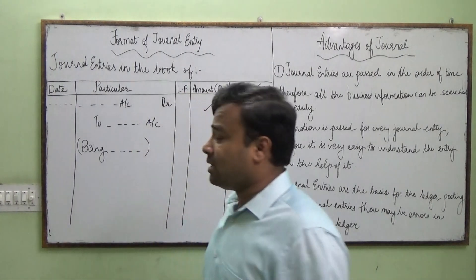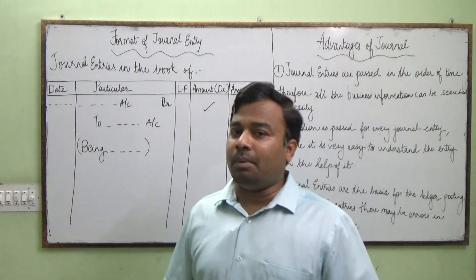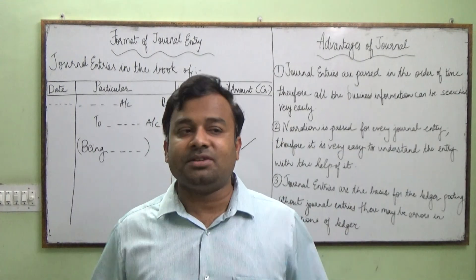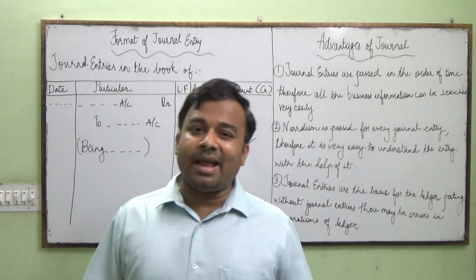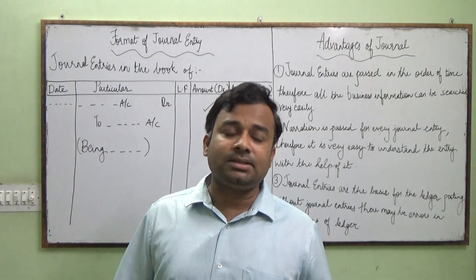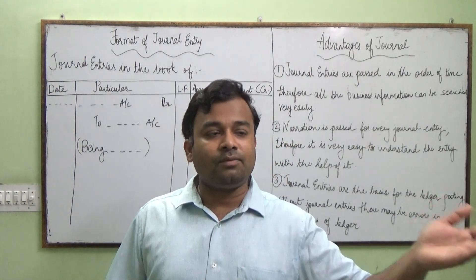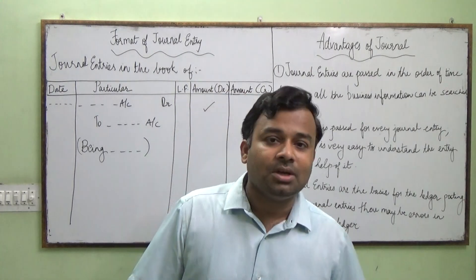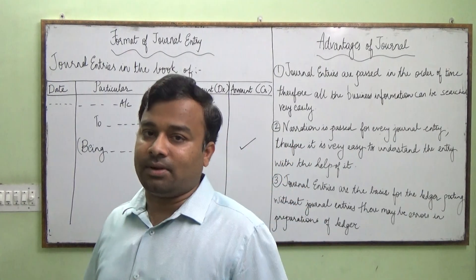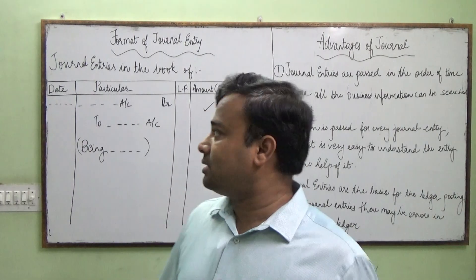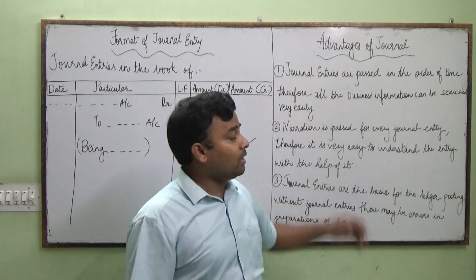Good morning students. This is our fourth lecture on Journal Entry. In the first lecture we discussed the double entry system and its advantages. In the second lecture we discussed accounts and types of accounts. In the third lecture we discussed debit and credit rules as per the accounting equation approach and the golden rules of accounting. In this fourth lecture we will discuss two topics: the format of recording transactions in a journal, and the advantages of journal.